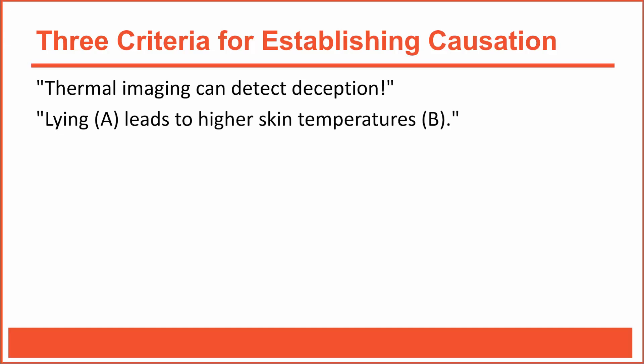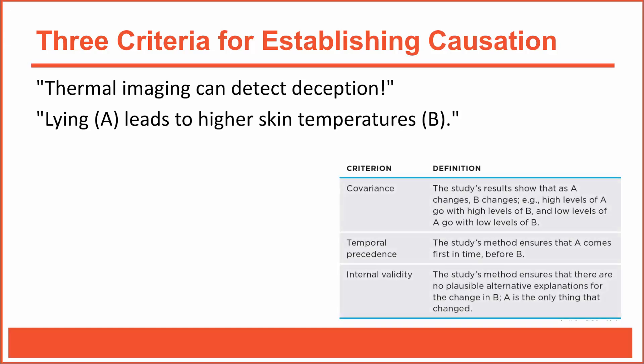So, we can rephrase the overall claim by stating: lying leads to higher skin temperatures. That's causal language — it's essentially stating that lying causes skin temperature to rise. Is this claim justified? Remember, causal claims are appropriate only when they meet the three criteria necessary for establishing causation: covariation, temporal precedence, and internal validity. Let's take a closer look at each.